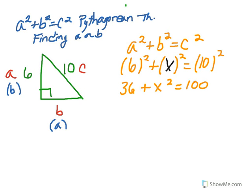We will now have to use some algebra to solve this. We will subtract 36 from both sides. Subtracting 36 from both sides gives us, on the left, X squared, and on the right, 64.